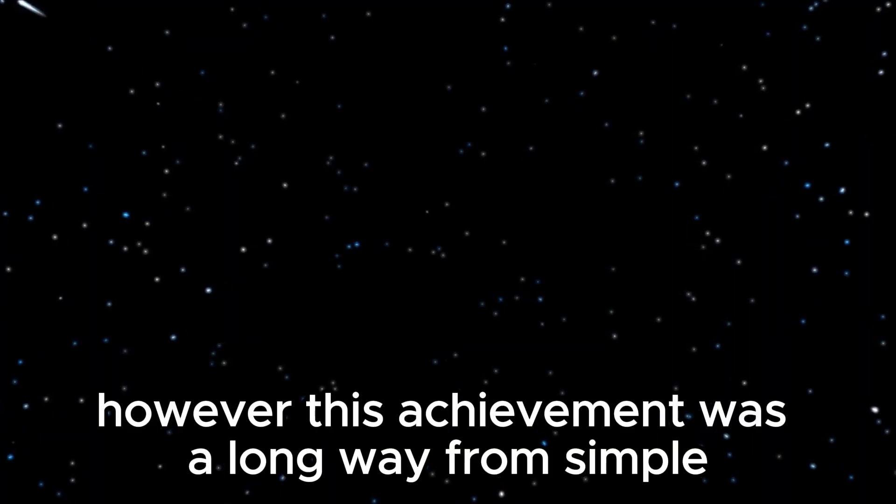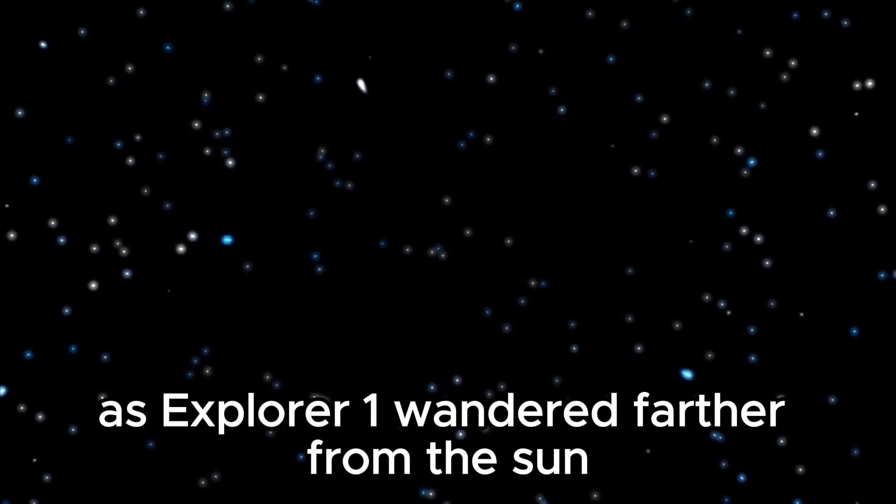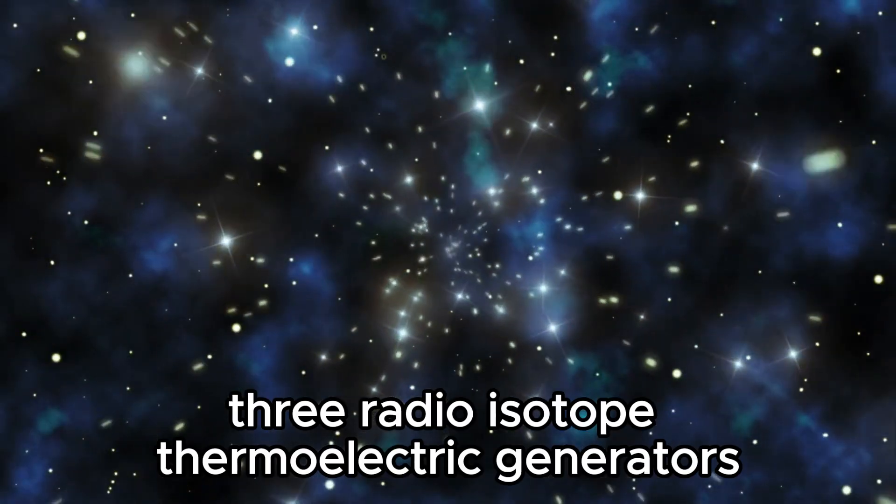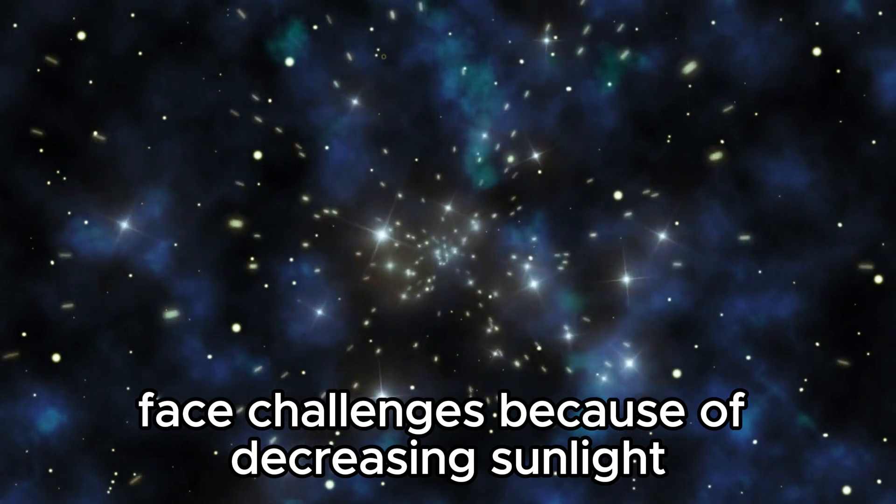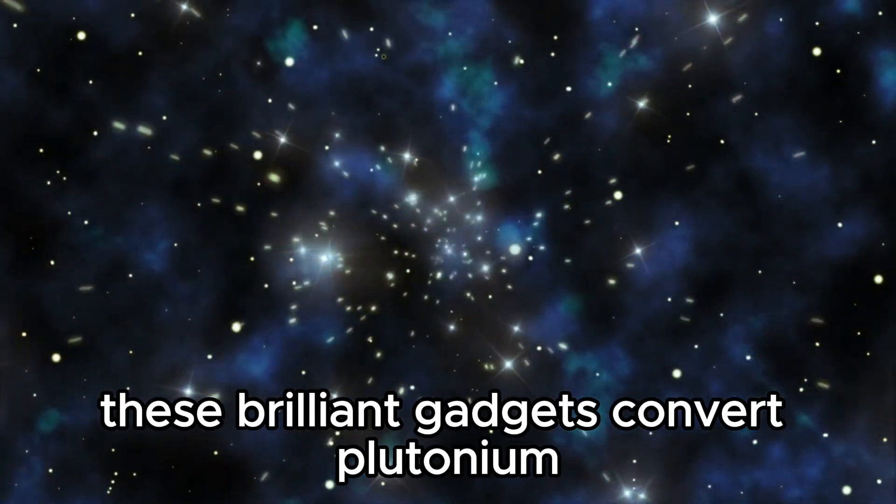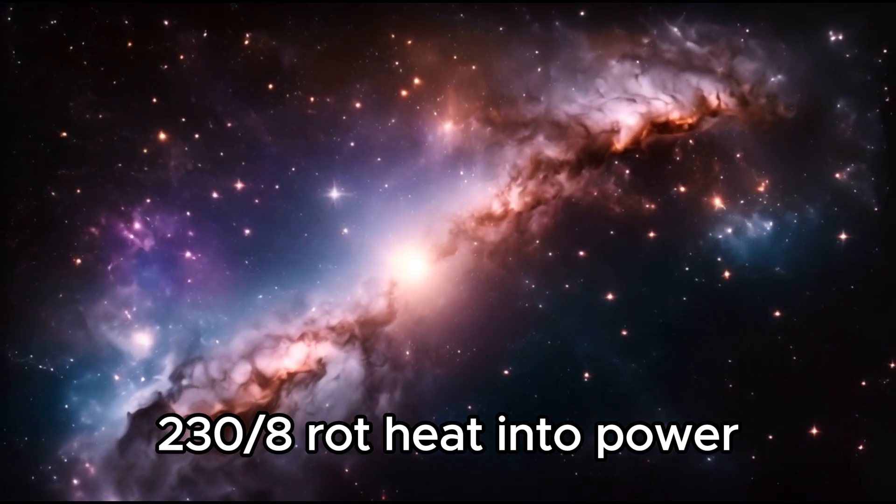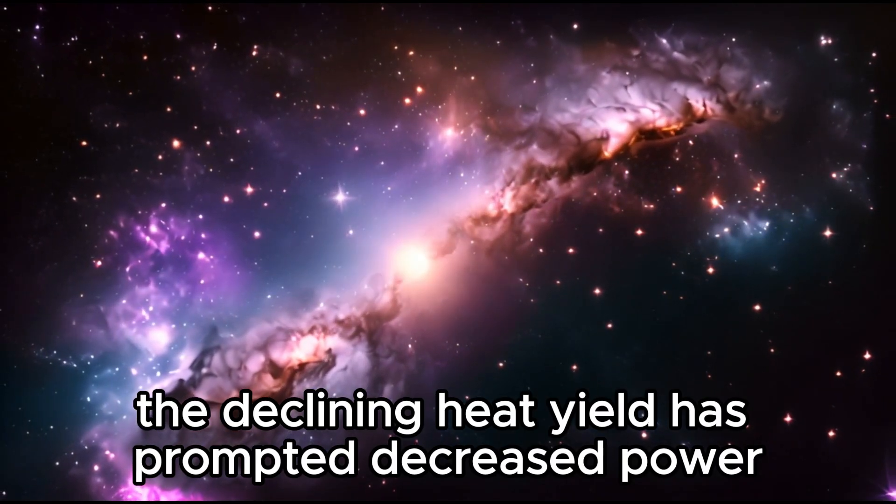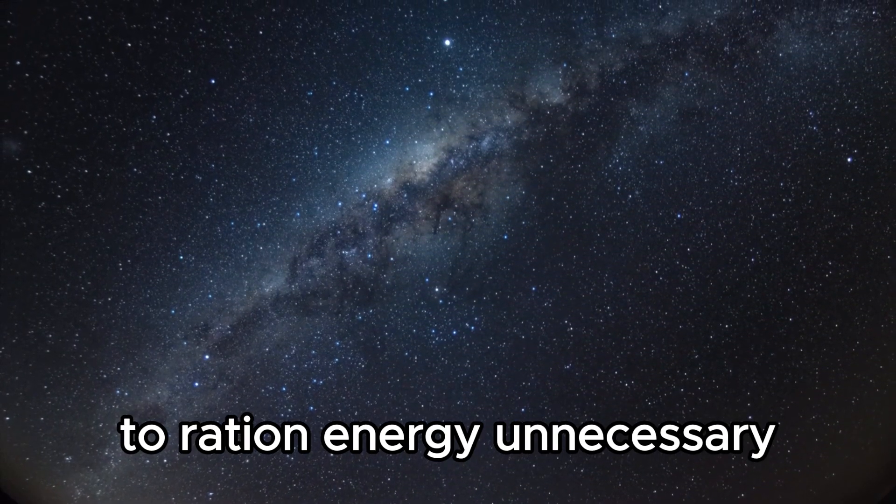However, this achievement was a long way from simple. As Explorer 1 wandered farther from the Sun, its power source, three radioisotope thermoelectric generators, faced challenges because of decreasing sunlight. These brilliant gadgets convert plutonium-238s wrought heat into power. The declining heat yield has prompted decreased power, influencing different installed frameworks to ration energy.